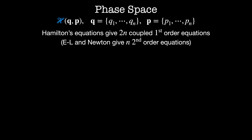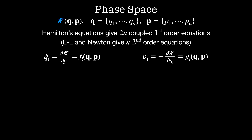Hamilton's equations evolve all of these positions and momenta forward in time, which means we need 2n coupled first-order equations to fully determine the dynamics of a system described by the Hamiltonian H. Hamilton's equations are: the rate of change of qi equals dH/dpi, which we call fi of q and p; and the rate of change of the generalized momenta pi equals minus dH/dqi, which equals some function gi of q and p. This is in contrast with both the Lagrangian and Newtonian methods, which give us n coupled second-order equations for each system.